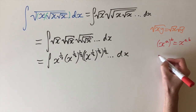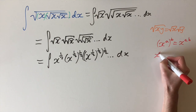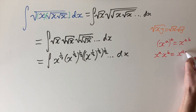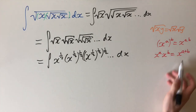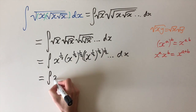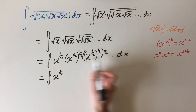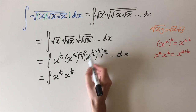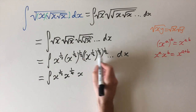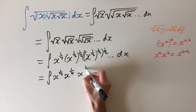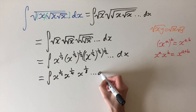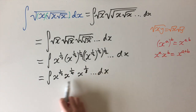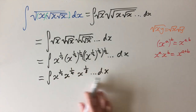Also, if we have two terms of the same base to different powers — x to the power of a times x to the power of b — we can just add the indices, giving x to the power of a plus b. Applying these rules: the first term is x to the power of a half; for the second term we multiply a half by a half, giving a quarter; and for the third term it's a half times a half times a half, which is one over eight. This process carries on.